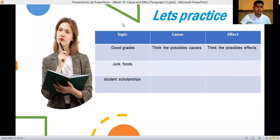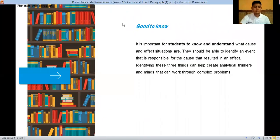We continue. Good to know. Good to know that it is important for a student to know and understand what cause and effect situations are. They should be able to identify an event responsible for the cause that results in effects. Identifying these three things can help us create analytical thinkers and minds that can work through complex problems. That is good to know.